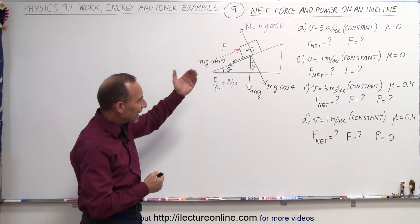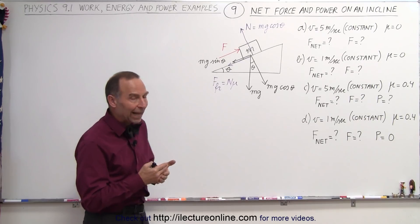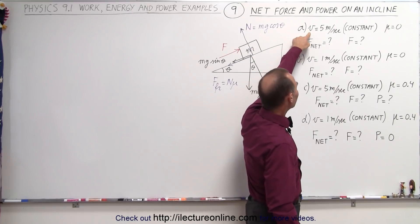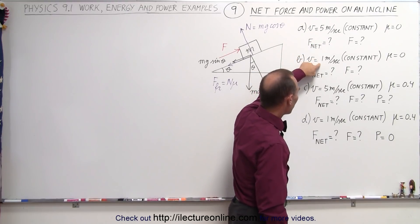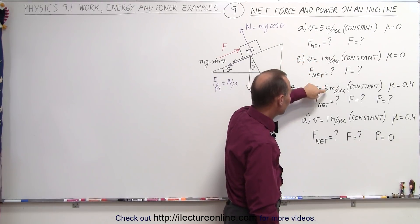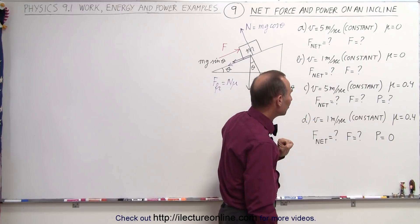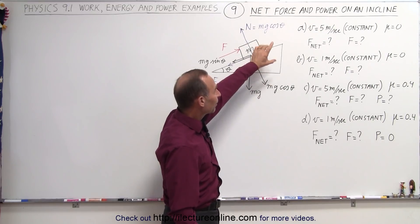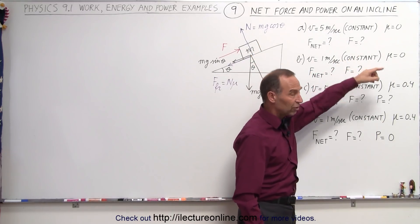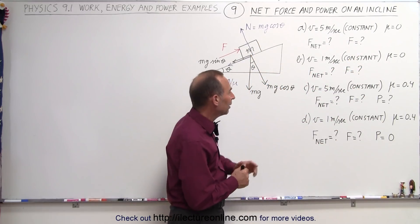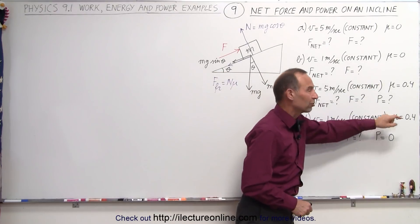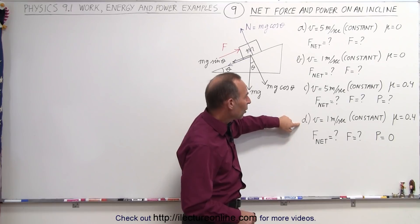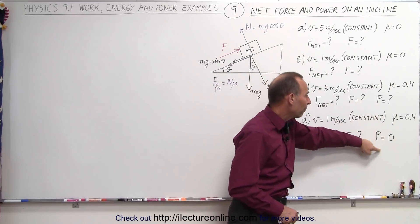In all these examples — A, B, C, and D — we will have a constant velocity. Notice, on A we have 5 meters per second, here we have 1 meter per second, 5 meters per second, and again 1 meter per second. In the first two examples, A and B, we have no friction between the block and the incline. For C and D, we do have friction, and for C and D we are also going to find the power.